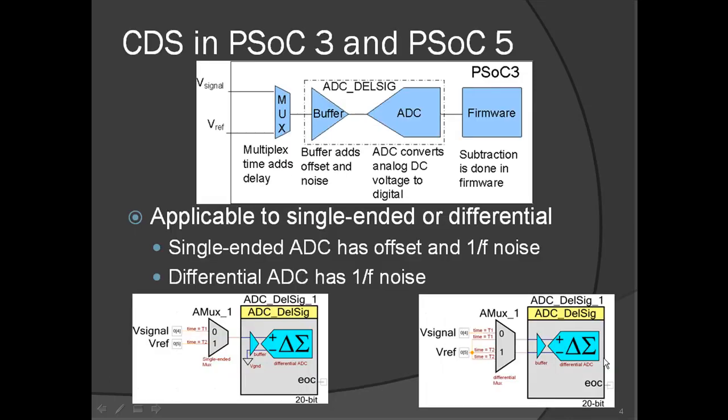The firmware implementation involves measuring V-signal at time T1 and V-ref at time T2 by the ADC, and then subtracting the two in firmware. The delay required for CDS is added by the switching speed of the MUX and the sampling frequency of the ADC. The technique can be applied to both single-ended and differential ADCs. PSoC 1 has only single-ended ADC, while PSoC 3 and 5 feature both.